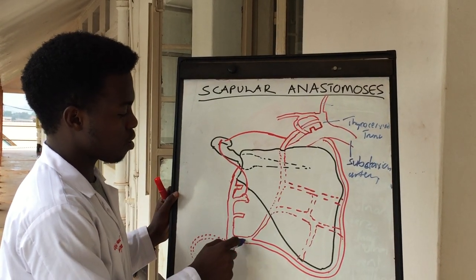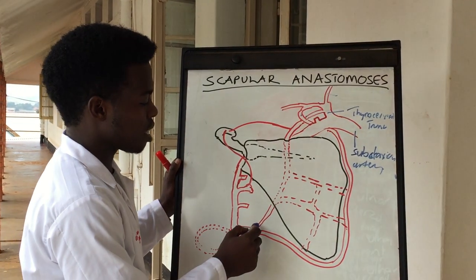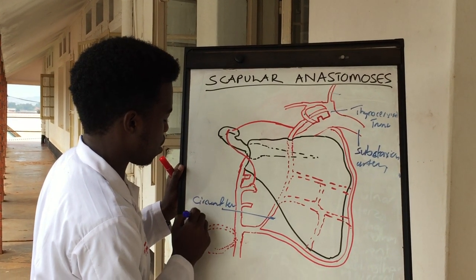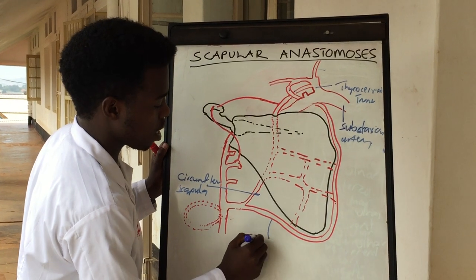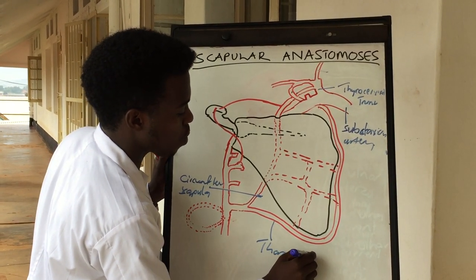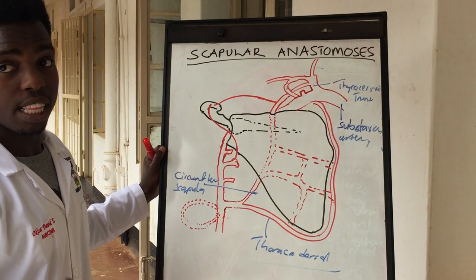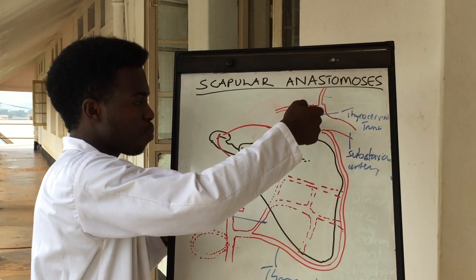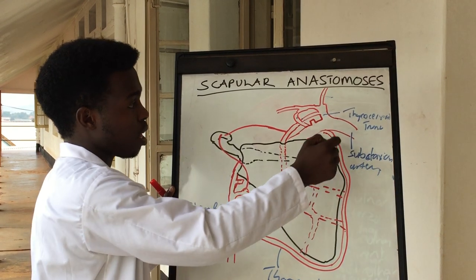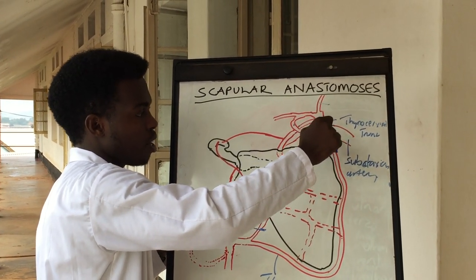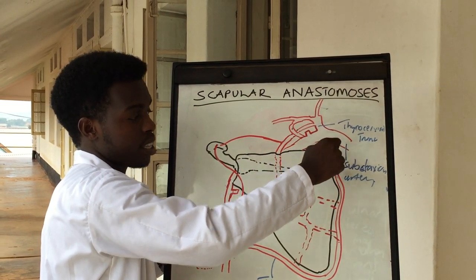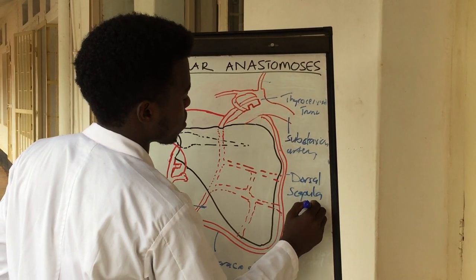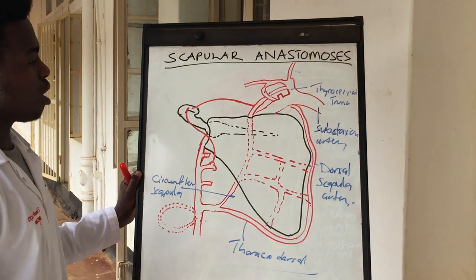The third part of the axillary artery gives us the subscapular artery, which gives us two main branches: the circumflex scapular and the thoracodorsal artery. The scapular anastomosis of the body is formed by the subclavian artery giving off the suprascapular artery together with the deep cervical artery or the dorsal scapular artery.